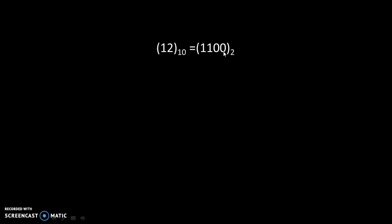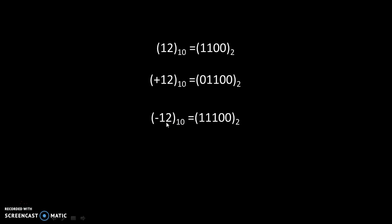Now, to indicate plus 12 we write 0 at MSB and the magnitude value remains 1 1 0 0, so plus 12 is written as 0 1 1 0 0. Similarly, for minus 12 the magnitude is 1 1 0 0, and at MSB we write 1 to indicate the minus sign. So minus 12 base 10 equals 1 1 1 0 0 base 2.